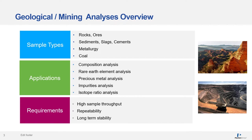Sample types can be very complex and diverse, and can be anything from rocks and ores to metallurgy and coal. For these sample types you're going to want to do a different analysis. You may want to look for their composition, concentration of rare earth elements, precious metals, their impurities, or an isotope ratio. You also have to consider whether the sample type will be for high throughput samples, repeatability, or long-term stability.